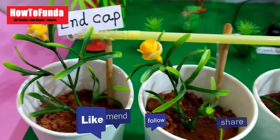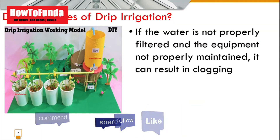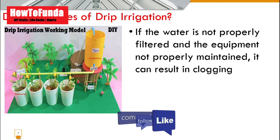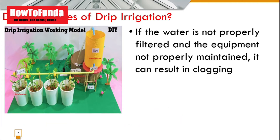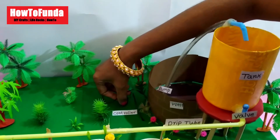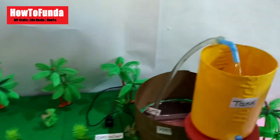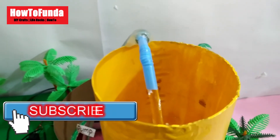Also, because the plastic pipes can degrade, they may contaminate soil contents as well as food crops. Another disadvantage is that if water is not properly filtered and equipment is not properly maintained, water can get clogged and may not be able to distribute across the different plants and trees in the field.